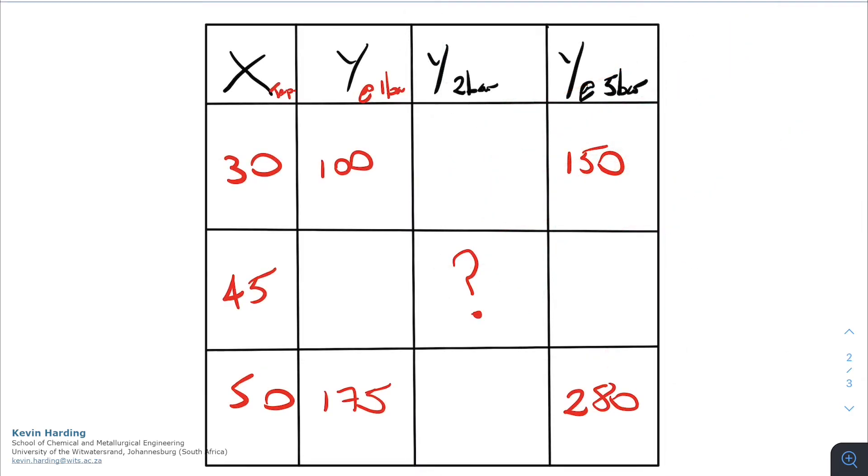Looking at the values of the table, we would start at a constant temperature of 30, so we could interpolate between 100 and 150 to get our value at that point at two bar. And the same thing between 175 and 280. From that we would then interpolate between those two points to get our middle value.